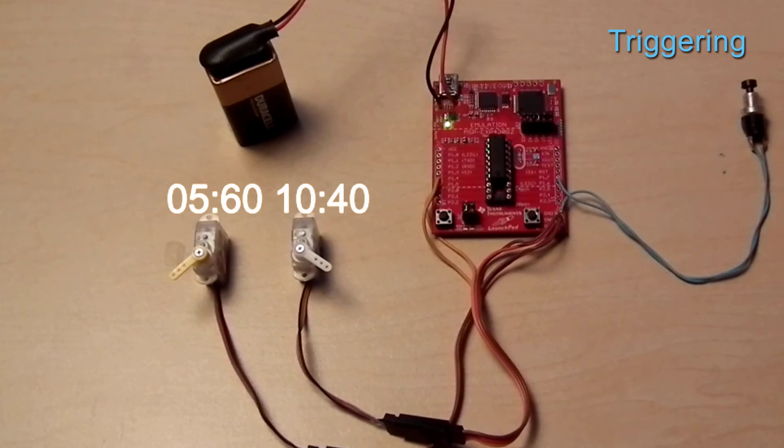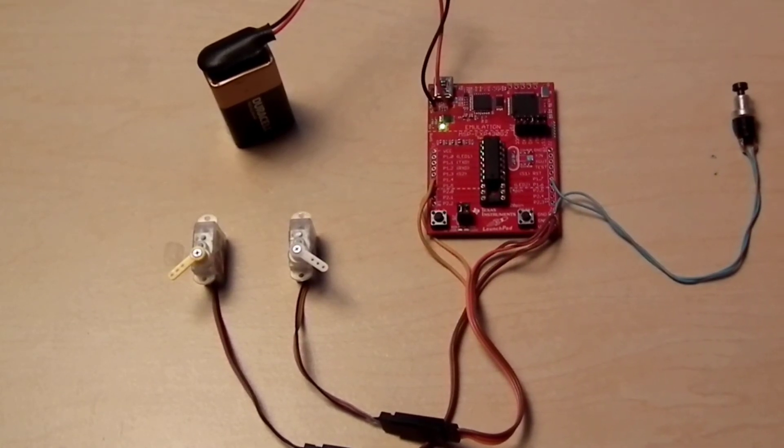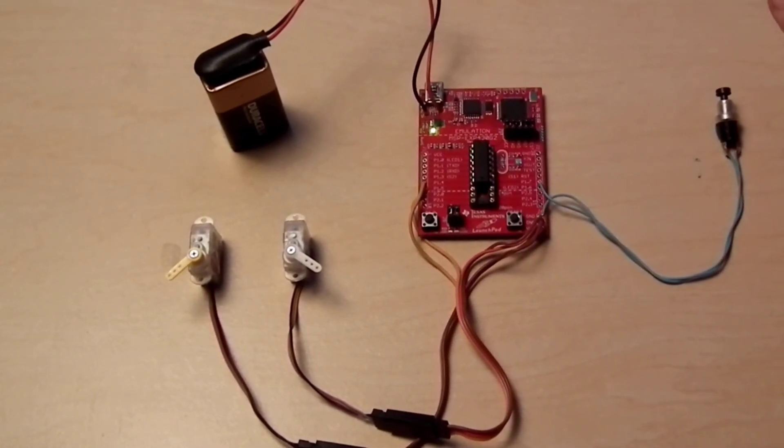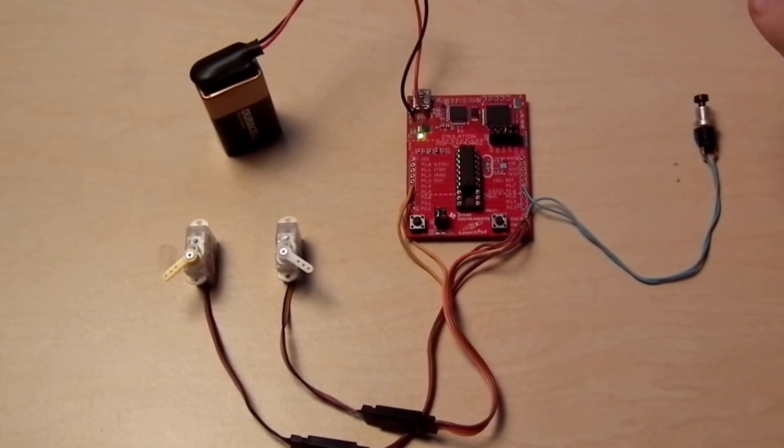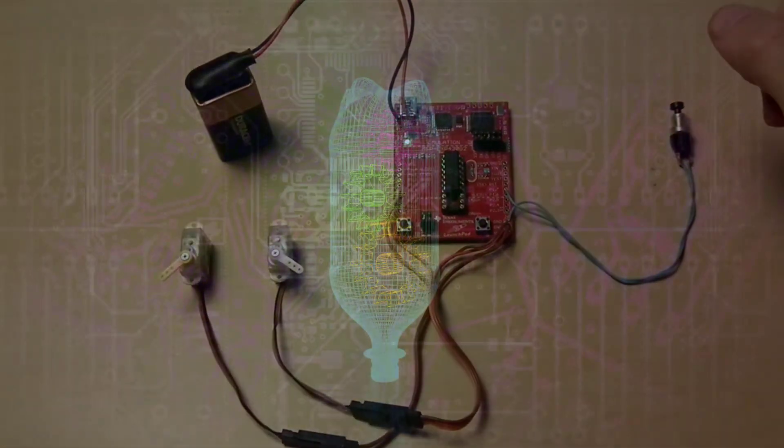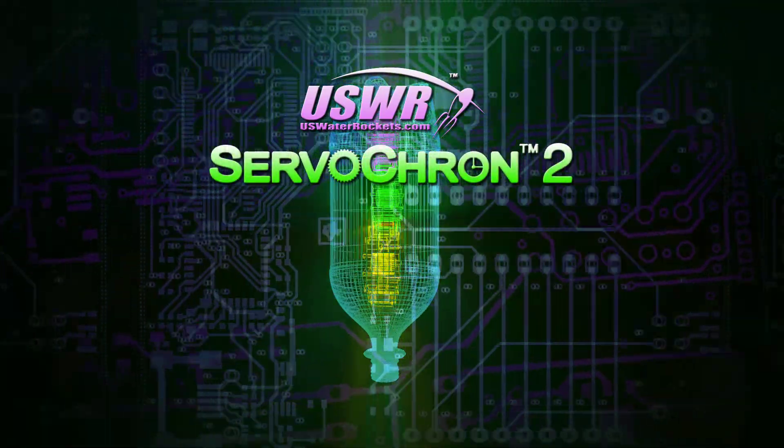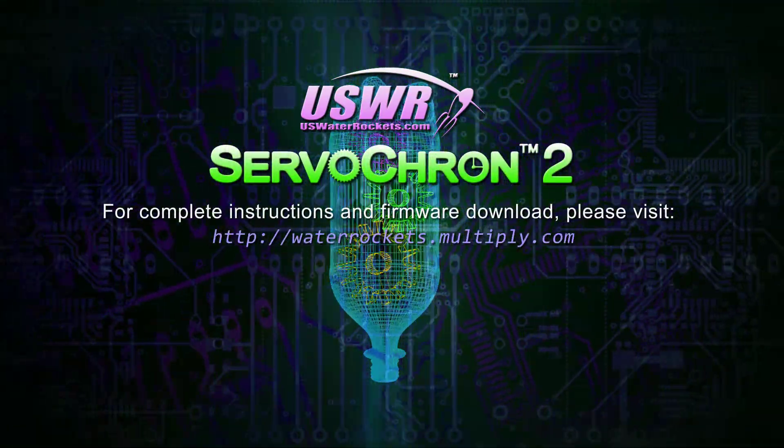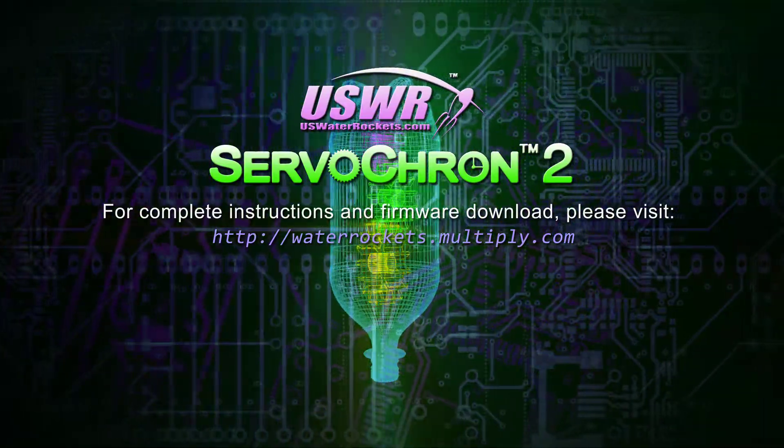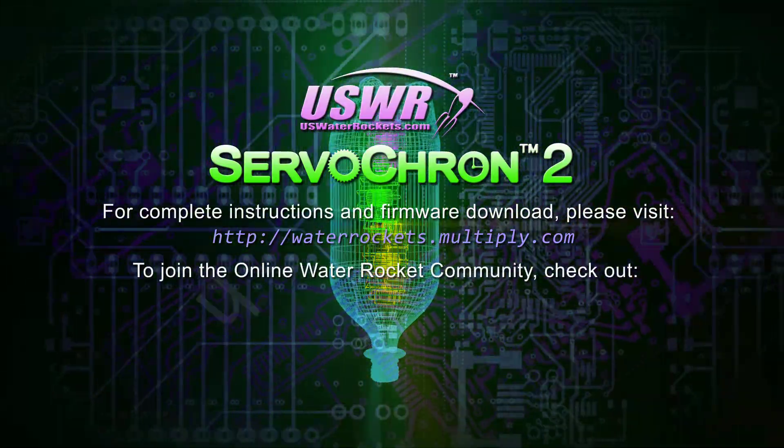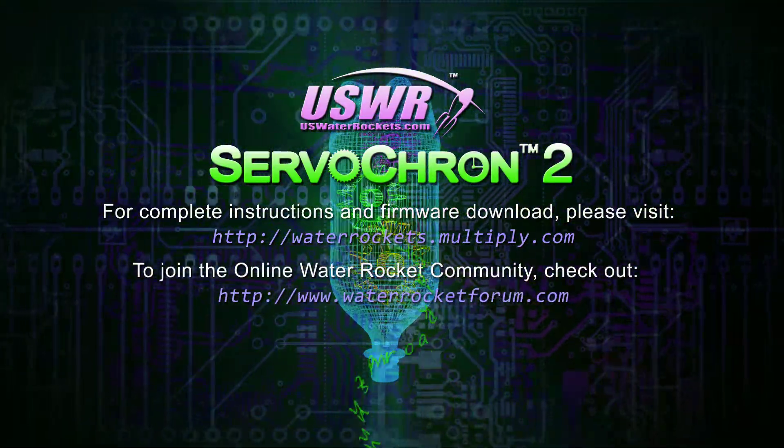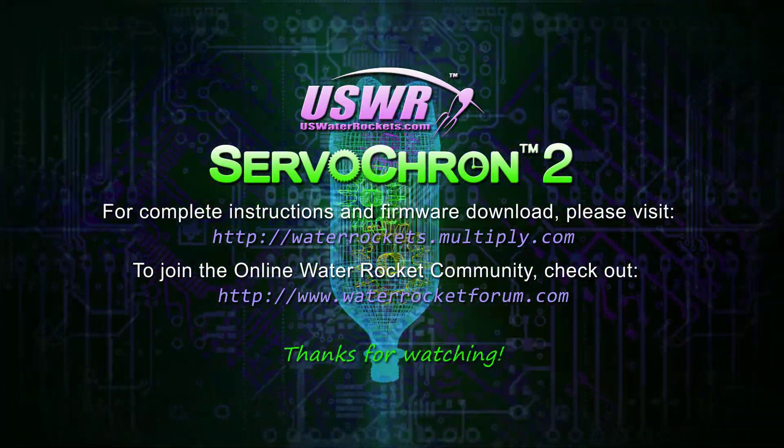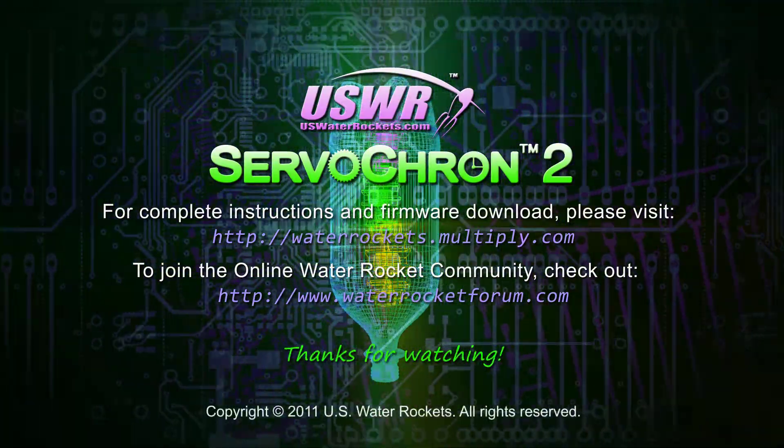That's all you need to know to configure the US Water Rocket Servocron 2, the dual servo recovery system at an Atomi timer price. For the complete Servocron 2 instructions and firmware downloads, go to waterrockets.multiply.com. To ask questions or request features for Servocron or Servocron 2, or just to hang out with the largest community of water rocket enthusiasts, go to waterrocketforum.com. Thanks for watching.